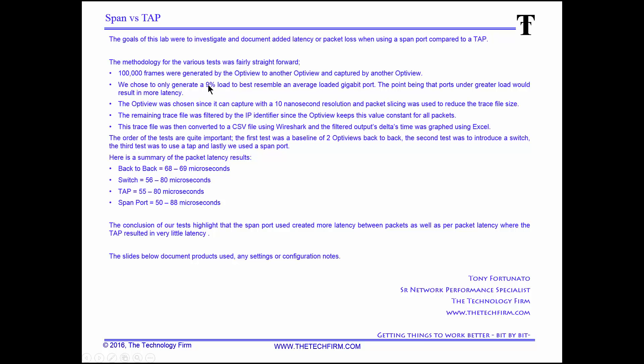We chose to generate a nine percent load on gigabit ethernet. I chose nine percent to prove that you don't need a hundred percent load to cause an issue — you can see the effects with just nine percent. The frame size was around 700-something bytes. I didn't want a full-size packet at full load, because some people say that's not realistic, and I wanted to show a realistic test.